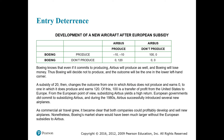The European government would prefer Airbus to produce the new aircraft. If the European government commits to a subsidy of 20 to Airbus regardless of what Boeing does, the payoff matrix changes. Boeing knows that even if it commits to producing, Airbus will produce as well and Boeing will lose money. So Boeing decides not to produce. A subsidy of 20 then changes the outcome from one in which Airbus does not produce and earns zero, to one in which it produces and earns 120.